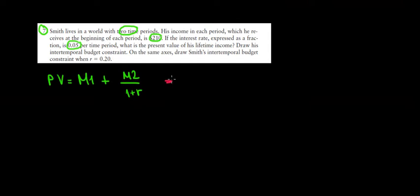What is that in numbers? The money in the first period is $210, plus the money in the second period is $210, divided by 1 plus 0.05. If we calculate this thing, we get $410. That's the present value of the income in both periods.